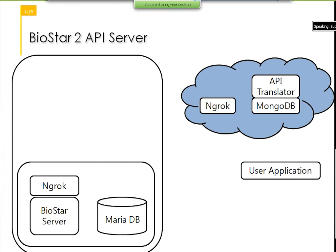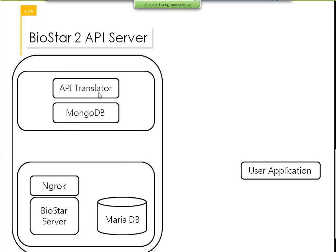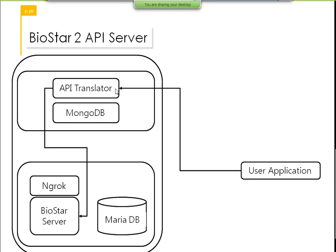This is how it works. Instead of going through the cloud like the web API, we will provide you an installer that will install the API server on your local server. You can have your own API server with the API translator and MongoDB to control all these issues. The user application will send the request to the API translator, but internally it doesn't need to go through the Ngrok. It directly goes to the Biostar server, and from the Biostar server it has access to the MariaDB. This is the difference between the web API and the API server. The actual APIs used are exactly the same — it's just how you are going to use it.